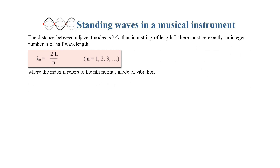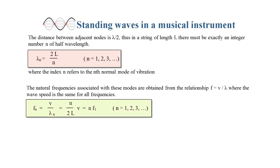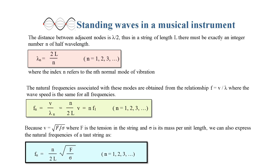The distance between adjacent nodes is λ/2, thus in a string of length L there must be exactly an integer number N of half wavelengths. Lambda equals 2L over N, where the index N refers to the Nth normal mode of vibration. The natural frequencies associated with these modes are obtained from F equals V over λ, where the wave speed is the same for all frequencies. F_N equals V over λ equals NV over 2L equals NF1. Because V equals the square root of F over σ, where F is the tension in the string and σ is its mass per unit length, we can express the natural frequencies as F_N equals N over 2L times the square root of F over σ.